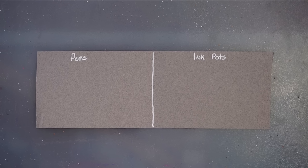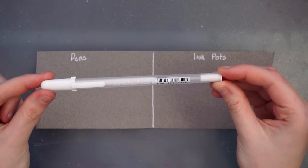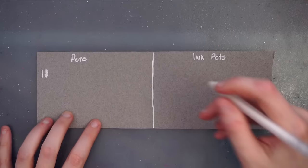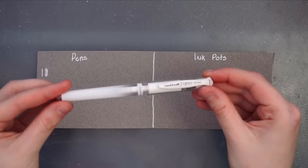I'm going to be swatching these inks a couple of different ways. The first way is going to be on this toned paper. We're going to start with the Sakura Jelly Roll. This is one of the white gel pens that I use a lot in my work. As you can see it's quite pigmented when swatched on the toned paper.